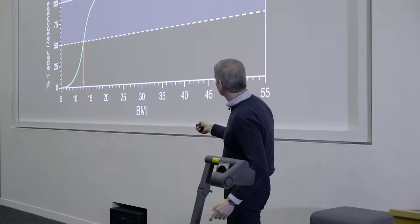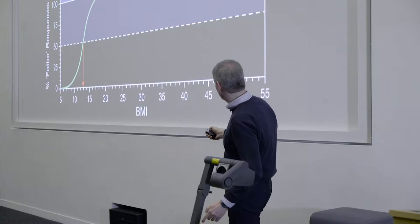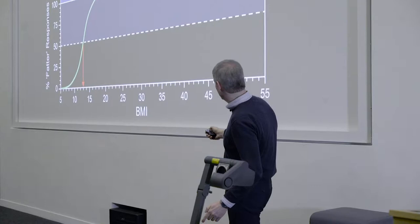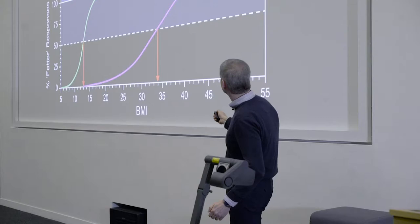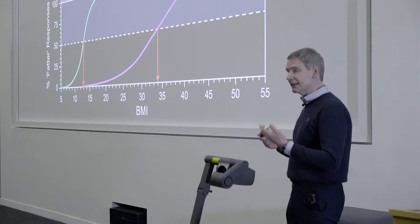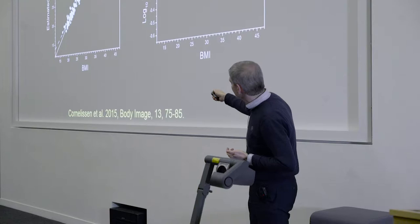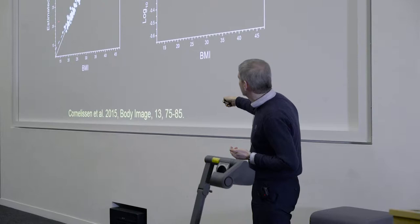Now just to recap that, you can have results like this - percentage of probability of saying it's fatter than you against the BMI of the bodies you're judging. You can get this nice steep curve here with the BMI quite low, or you can get a much flatter curve which suggests you're much poorer at discriminating between bodies. Now what do we get if we plot those estimates against the person's actual body size? This is just for 100 healthy controls. This is the plot of their estimated body size, what they think they are, against their actual BMI. And if they're perfectly correct they would follow that white line. They don't.